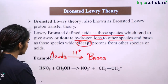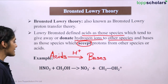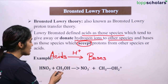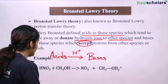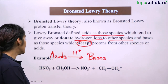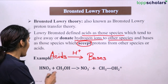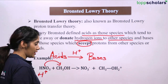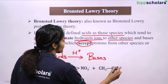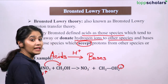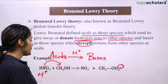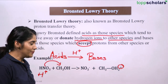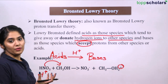For example, HNO3 plus methanol: this is nitric acid and this is methanol. When they react, HNO3 gives H+ to CH3OH, making it CH3OH2+ — positively charged because of the extra proton. HNO3 loses one proton; therefore, HNO3 is the acid because it donated one proton, and methanol is the base because it accepted one proton.